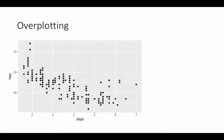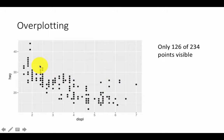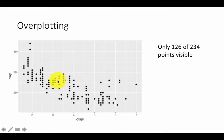Let's look at this topic of overplotting. In this dataset you see all these points — in reality there are 234 points in the mpg data frame, but it looks like only 126 points are visible. The remaining points did not show up because they are being overplotted: you get a point and then on top of that another point has been plotted, so you're missing some information.